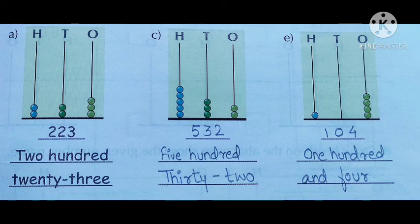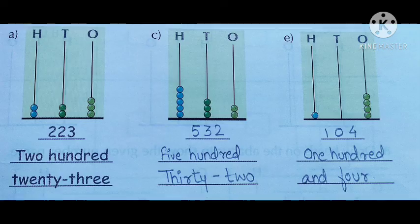In the third one, there is one bead drawn in the hundreds section, so it is one hundred. There are no beads in the tens section, so it is zero. And in the ones section, there are four beads, so it is four. So, one hundred and four — because there is no tens, we will just call it one hundred and four.